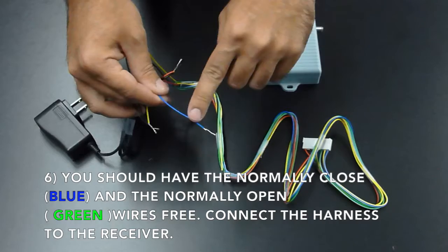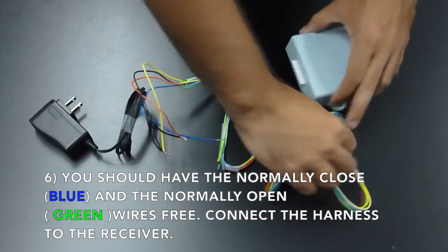You can now connect the harness to the receiver, which should have the blue and green wires frayed.